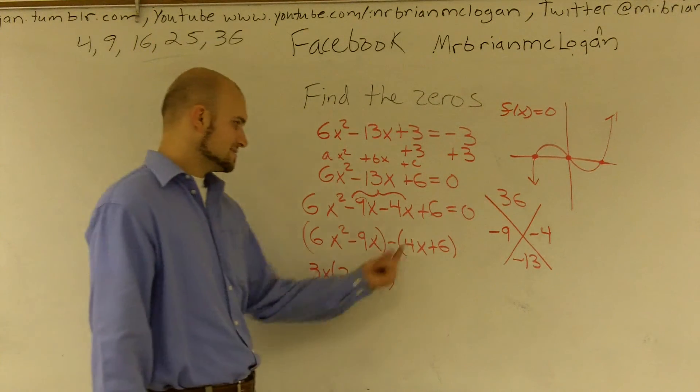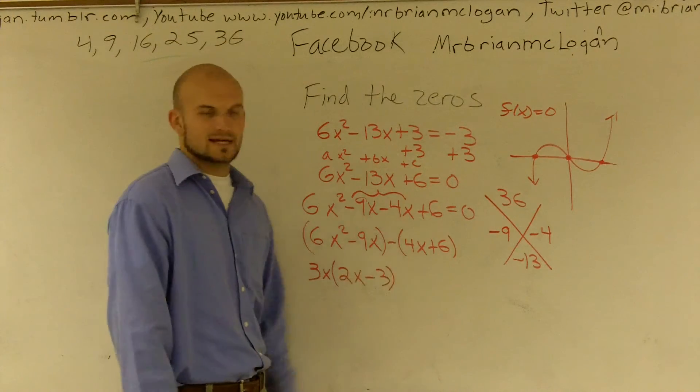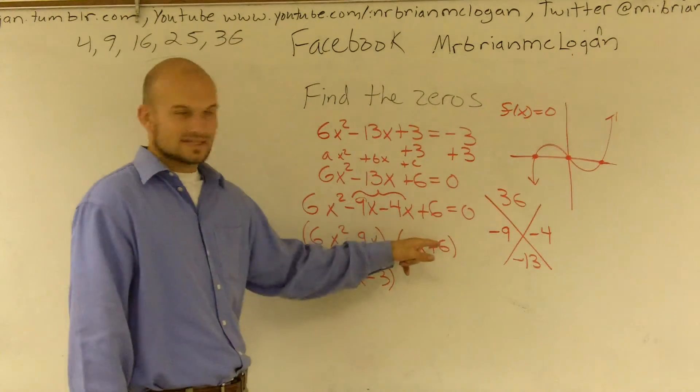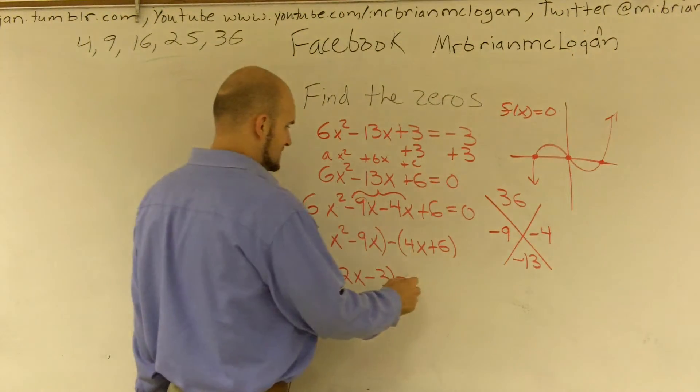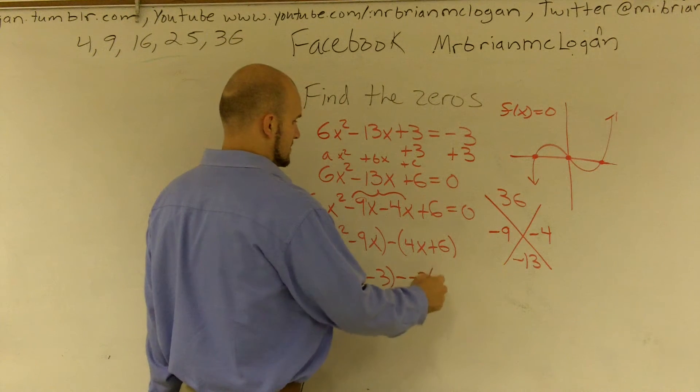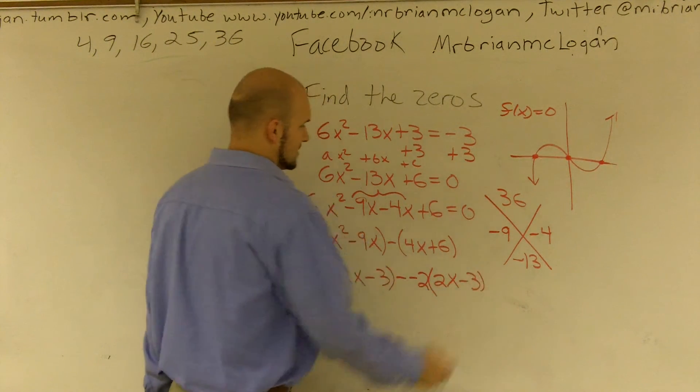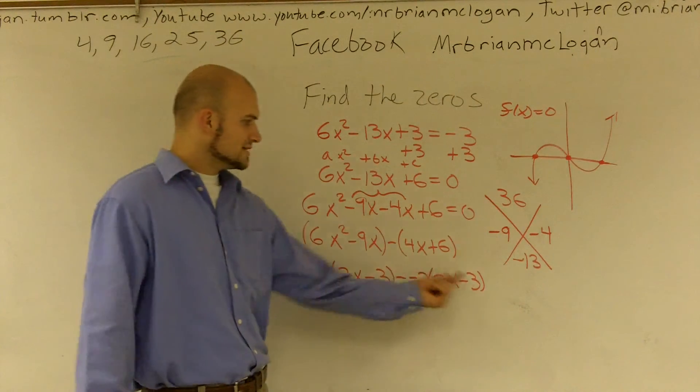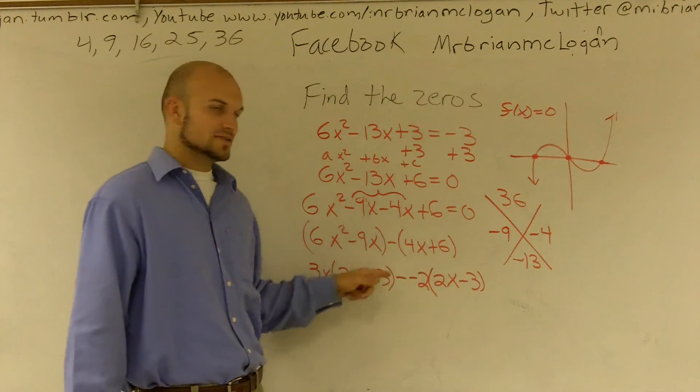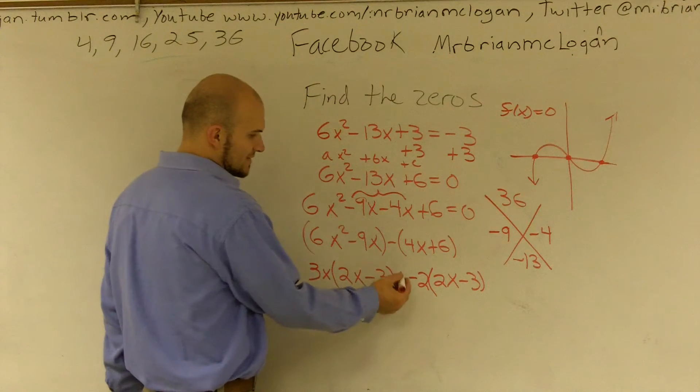And then here, I kind of want to get this to be the exact same. A lot of you would say, well, let's take out a 2. Well, I'm going to want to get that to be a negative. So I'm actually going to take out a negative 2. When I take out a negative 2, I'm left with a 2x minus 3. See, the reason I knew these - I want these to be the same, so that's why I factor out a negative 2. Well, a negative and a negative, we're going to make it positive.